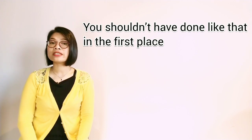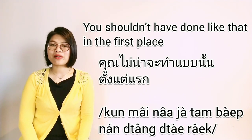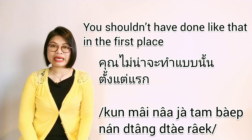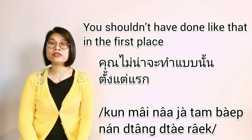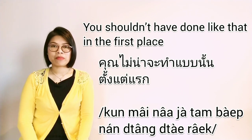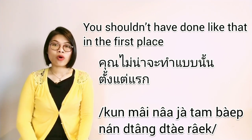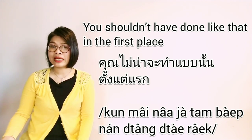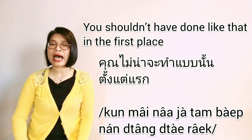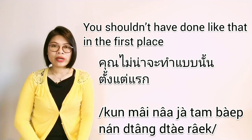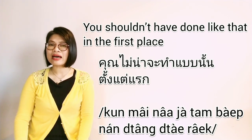Next: 'You shouldn't have done like that in the first place.' In Thai: คุณไม่น่าจะทำแบบนั้นตั้งแต่แรก. This time I include คุณ (you). ไม่น่าจะทำแบบนั้น means 'shouldn't have done like that.' The word น่าจะ means 'should have done something,' and if you want to make it negative — 'shouldn't have done' — put ไม่ in front: ไม่น่าจะ. Then ทำ is 'do/done,' and แบบนั้น means 'like that.'